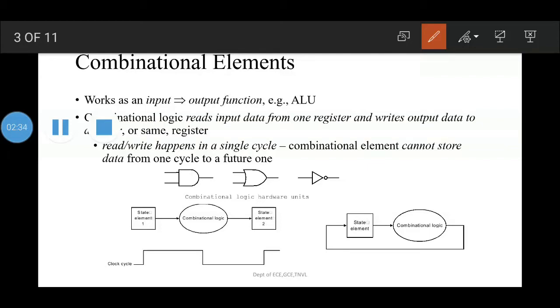For simplicity, we haven't used any write control signal here because the state element is written on every active clock edge. In contrast, if a state element is not updated on every clock, then an explicit write control signal is required. Both the clock signal and the write control signals are inputs, and the state element is changed only when the write control signal is asserted and a clock edge occurs.